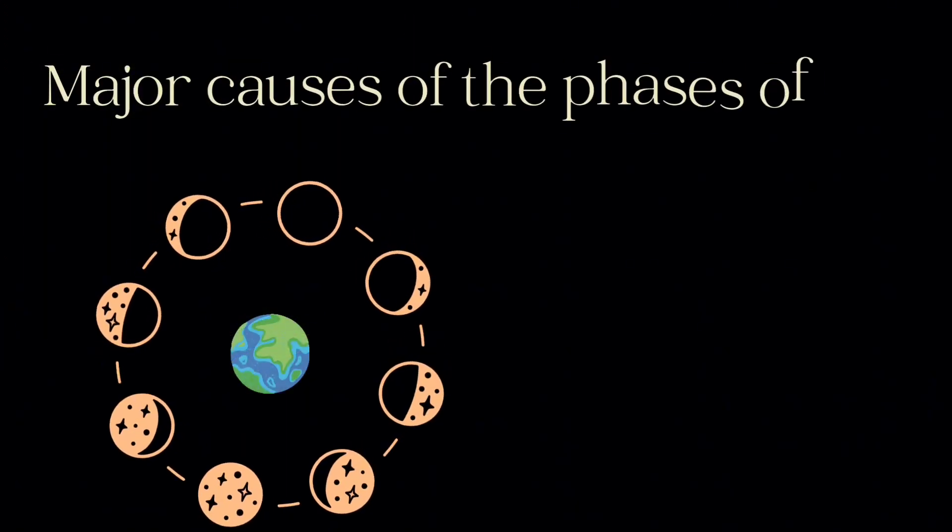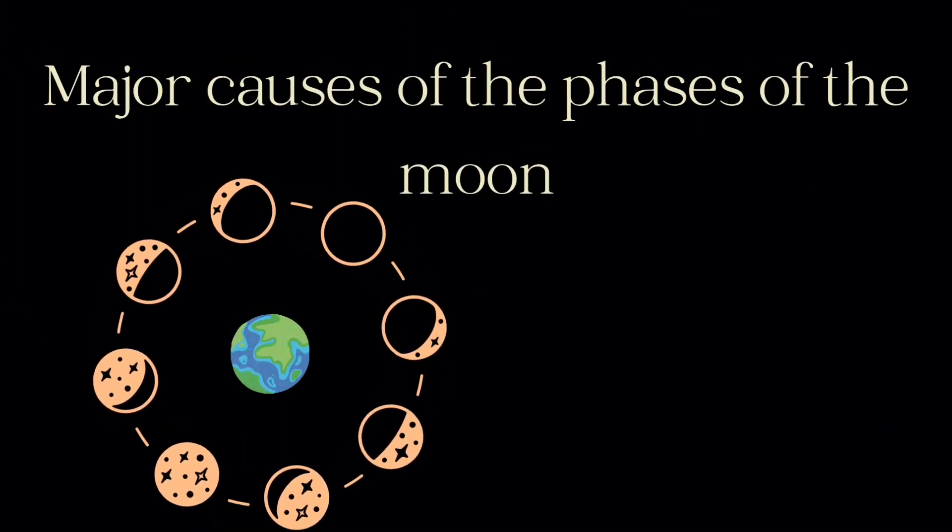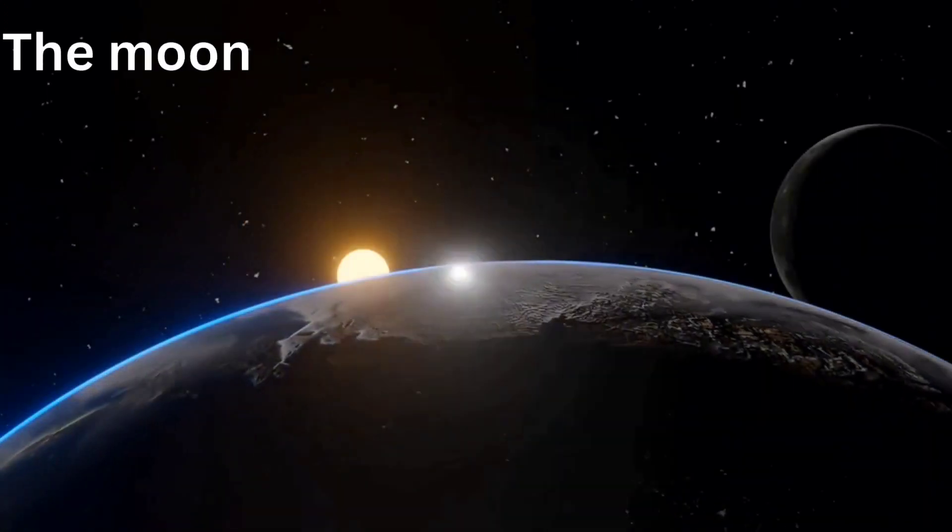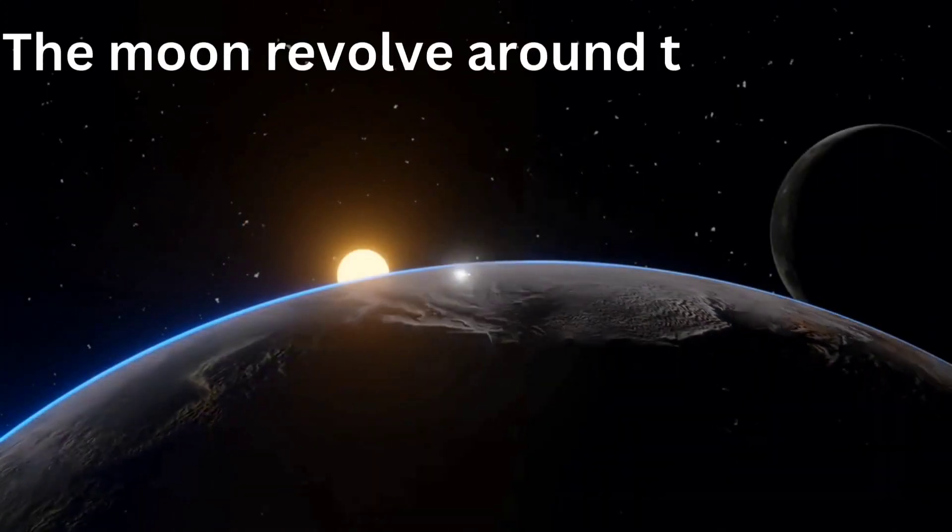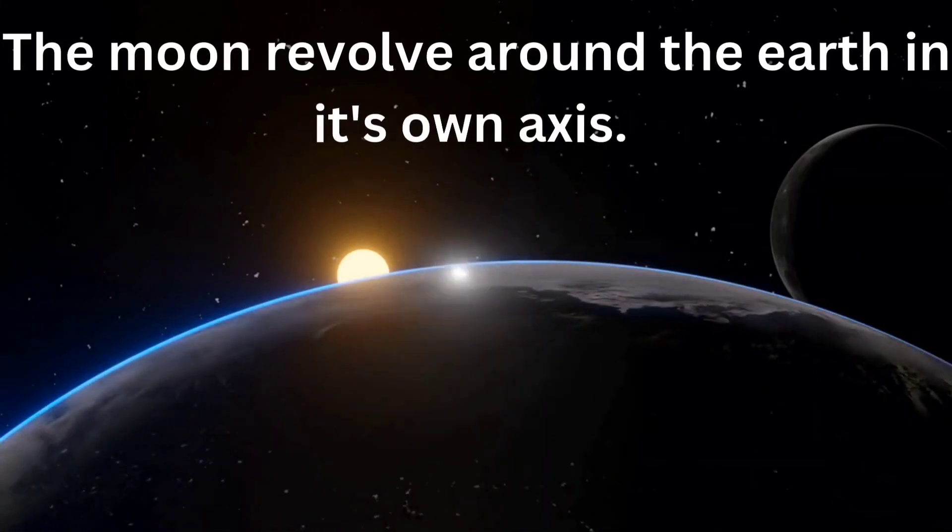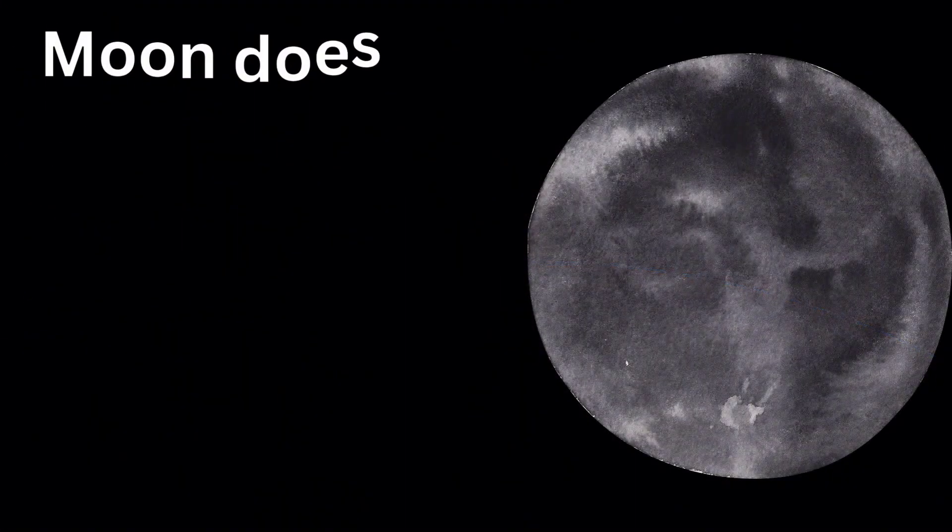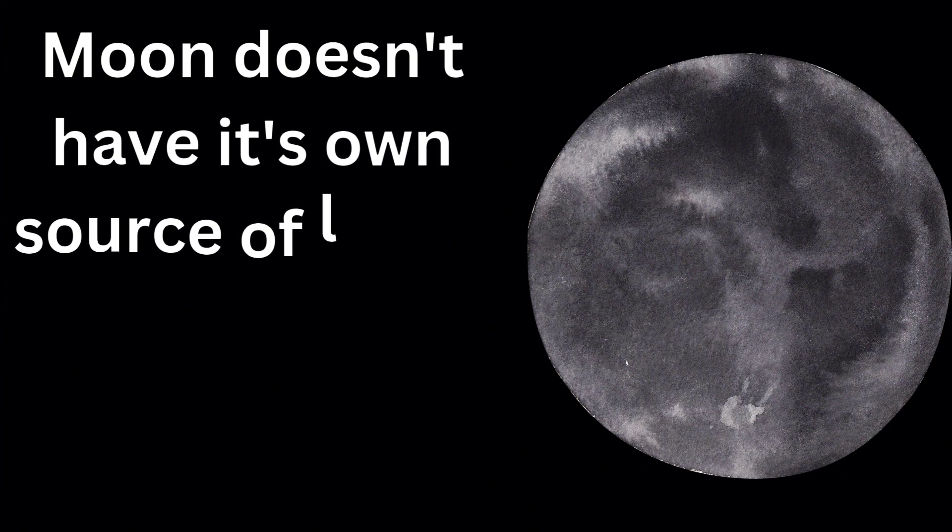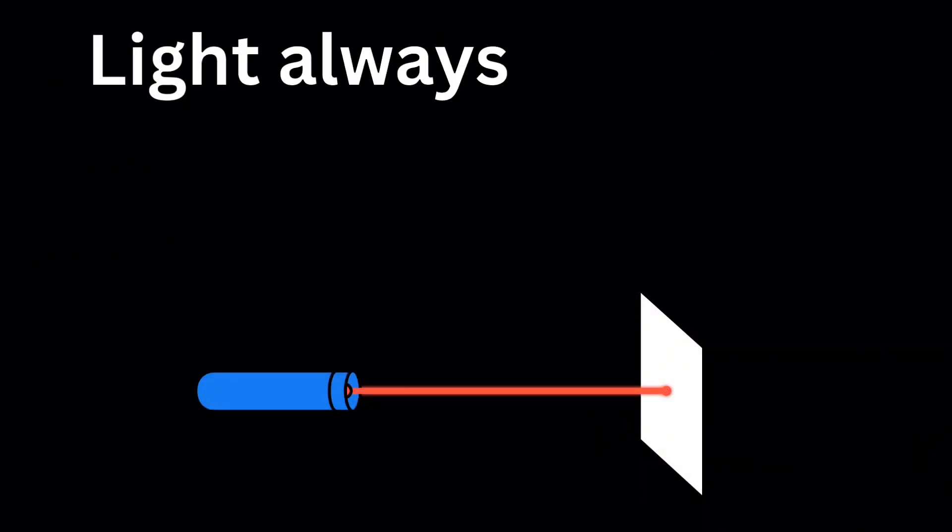Major causes of the phases of the moon: the moon revolves around the Earth in its own axis, the moon doesn't have its own source of light, and light always travels in a straight path.